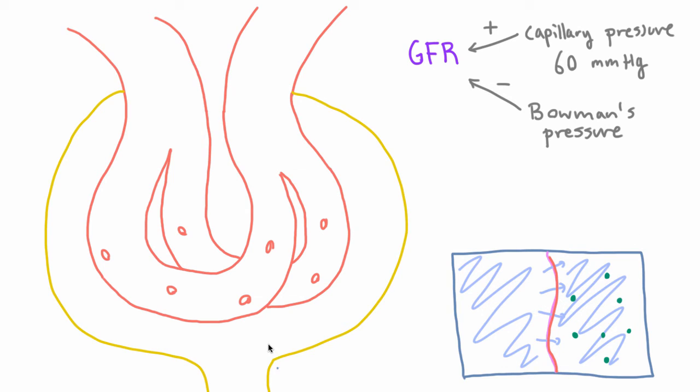Well, they do, but there's one solute that doesn't, and that is proteins. So as we mentioned, proteins cannot get out of the capillary into Bowman's space, and proteins are a solute, and they do cause a kind of osmotic pressure.